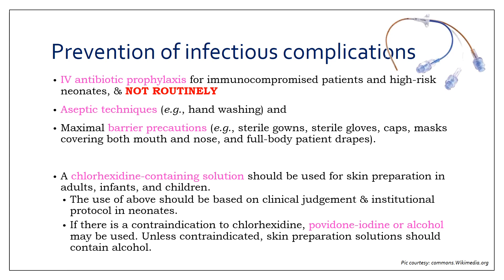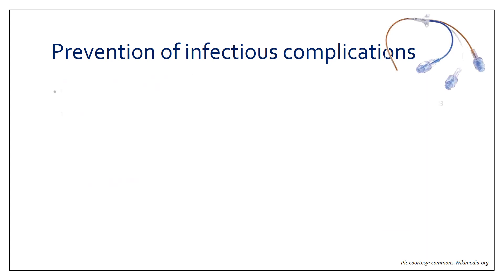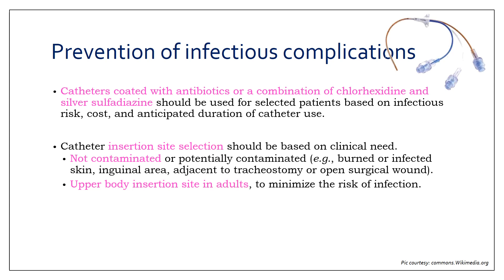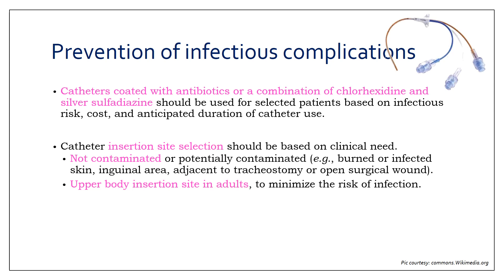If there is a contraindication to the use of a chlorhexidine-containing solution, povidone-iodine or an alcohol-based solution can be used. Catheters coated with antibiotics or a combination of chlorhexidine and silver sulfadiazine should be used for selected patients. The catheter insertion site should not be contaminated or potentially contaminated.